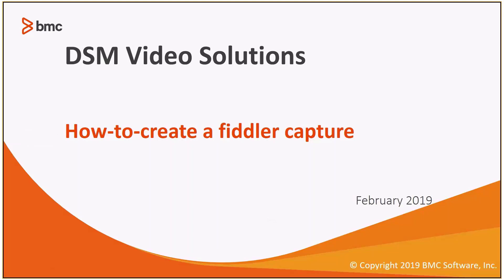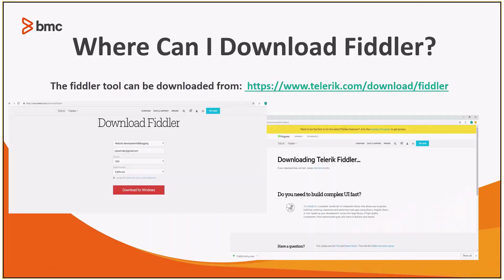In order for you to send BMC support a Fiddler Capture, you'll need to download the Fiddler tool. You can find the Fiddler tool at the following website. Once you get to the website and download Fiddler, you'll be asked why you are using the tool, your email address, the country, your state, and you'll need to accept the end user license agreement.